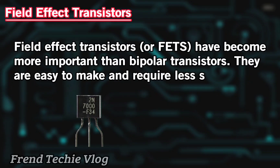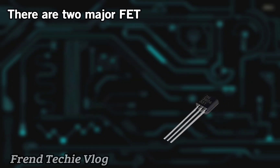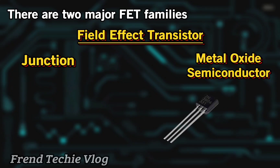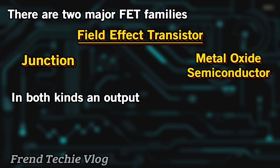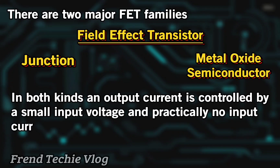They are easy to make and require less silicon. There are two major FET families: junction and metal oxide semiconductor. In both kinds, an output current is controlled by a small input voltage and practically no input current.